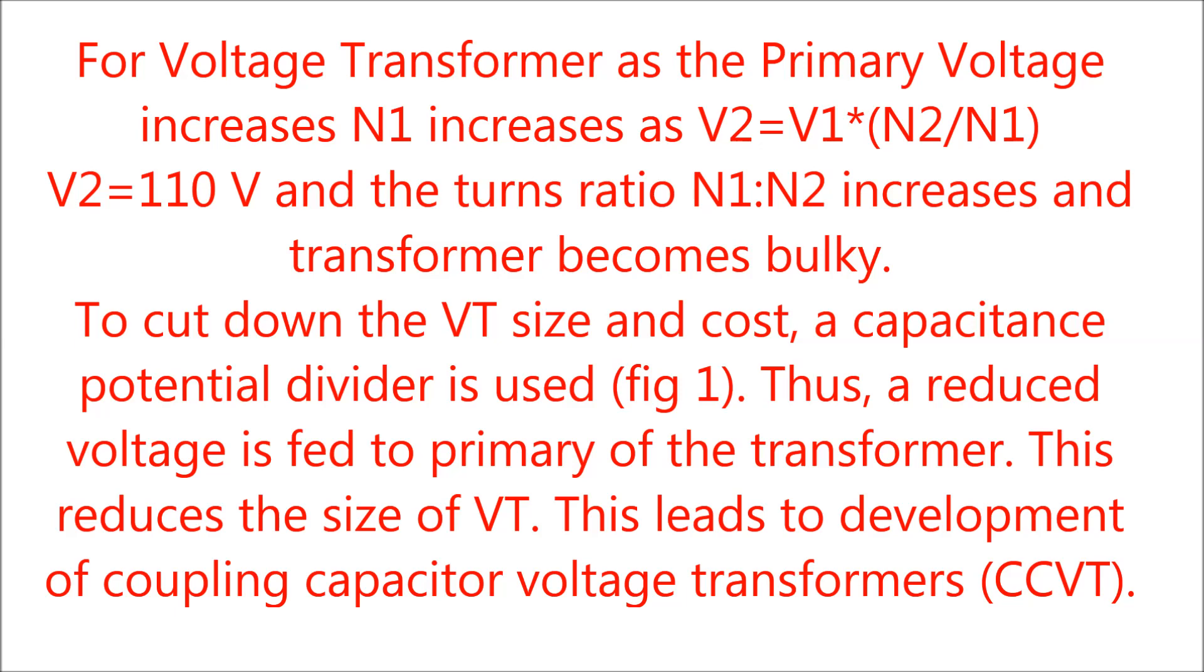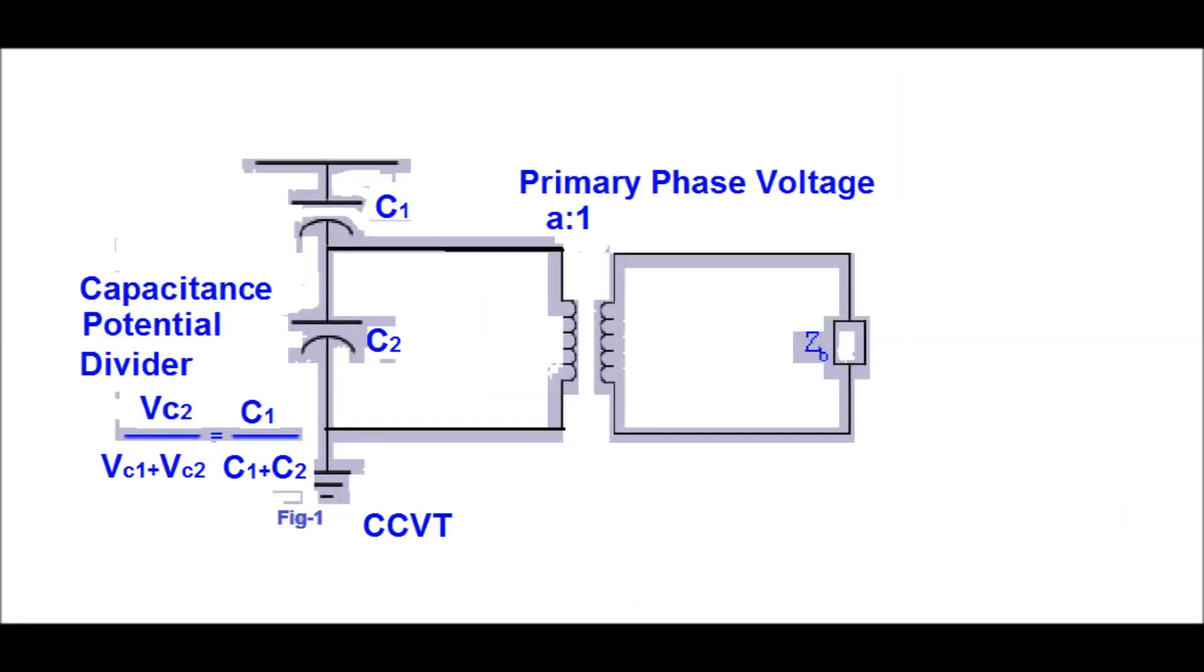This leads to the development of Coupling Capacitor Voltage Transformer (CCVT). A simple diagram of CVT has been shown in this figure. C1 is the high voltage side capacitor, and C2 is the capacitor across the primary side of the voltage transformer.